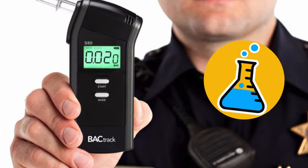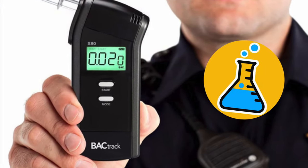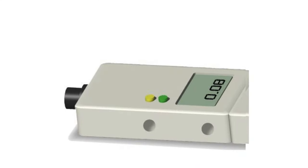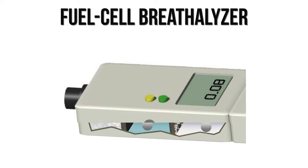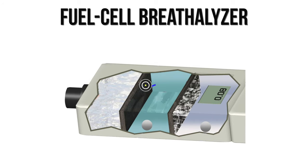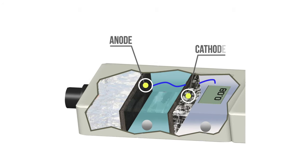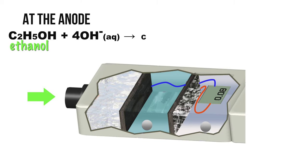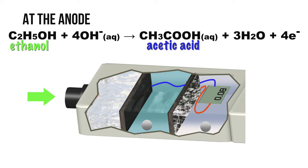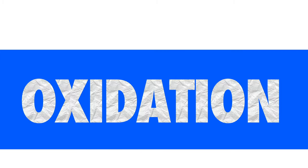So, what is the chemistry behind the breathalyzer? Let's look at one type of breathalyzer, called a fuel cell breathalyzer. It contains two platinum electrodes, anode and cathode, wired to a meter and an electrolyte between the electrodes. When you blow into a breathalyzer, ethanol in your breath is oxidized at the anode and forms acetic acid. It is an oxidation reaction.